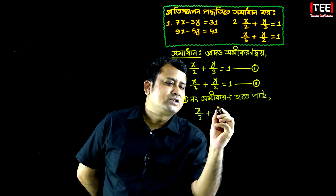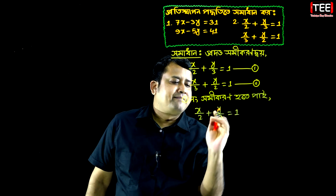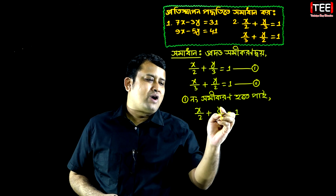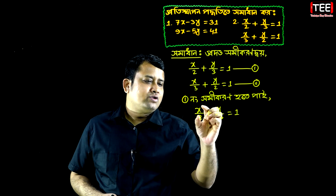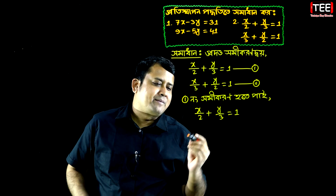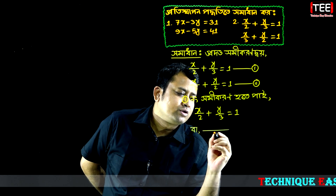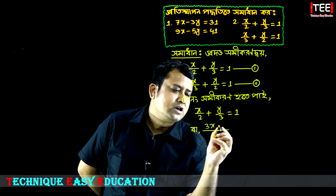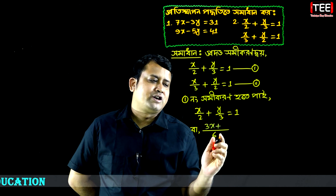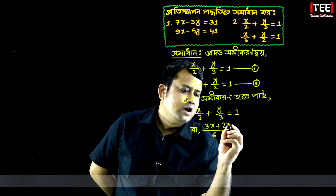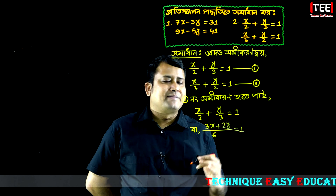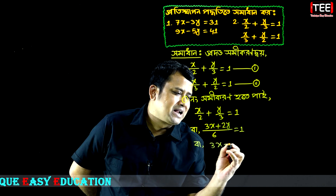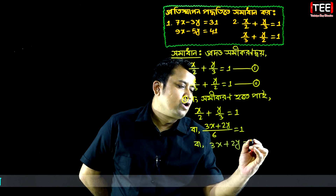x by 2 plus y by 3 equal to 1. We will be x by y by 3 equal to 1. So we will be x by 2 plus y by 3 equal to 1. We will be x by 2 plus y equal to 1 and 6.